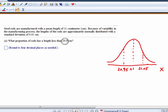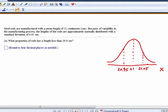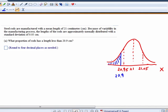So we want to know the proportion of steel rods less than 20.9. If I label 20.9 on my model, the proportion left would be represented by this area. We're going to use StatCrunch to find that area.